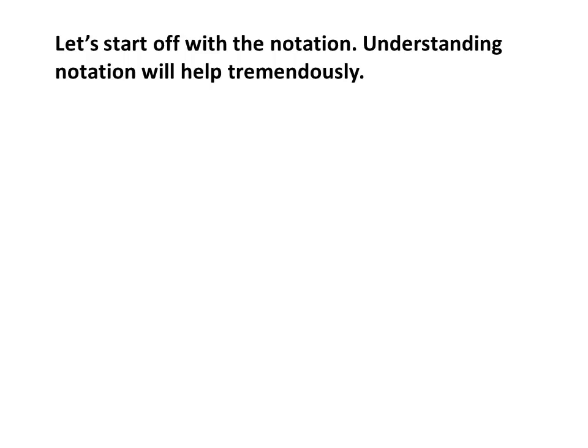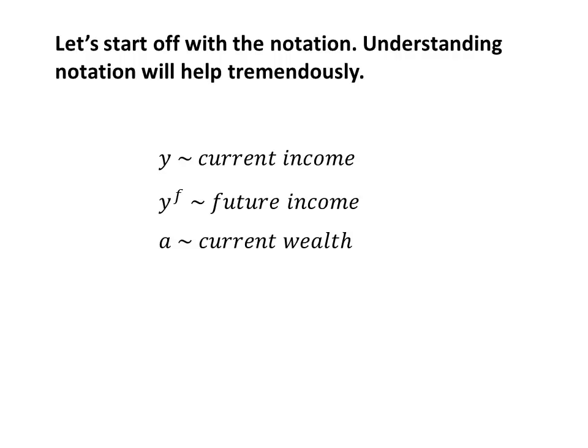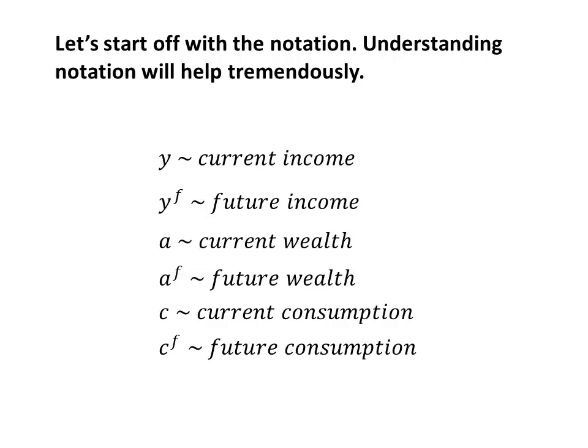Let's go ahead and begin with notation. This is the notation used in the class I am teaching — your notation may be a little different. Y is going to be our current income. YF is going to be our future income. A is going to be our current wealth. AF is going to be our future wealth. C is going to be our current consumption, and CF is going to be our future consumption. We've got Y, A, and C for income, wealth, and consumption, and then we just superscript F for future.